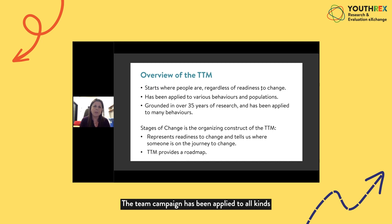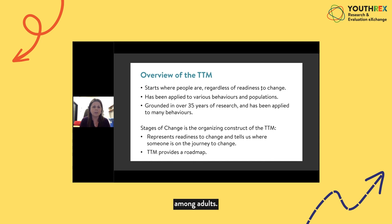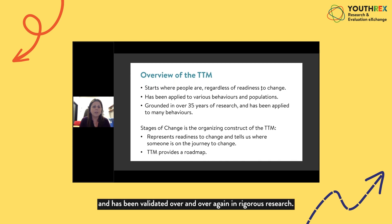The TTM can be and has been applied to all kinds of behaviours and populations, from bullying prevention among elementary school children to smoking cessation among adults. Another key feature of the TTM is that it's based in over 35 years of research. The general model evolved out of and has been validated over and over again in rigorous research.